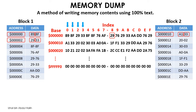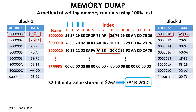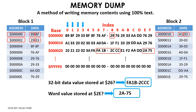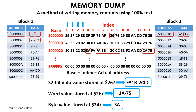Combining this with the knowledge of various data sizes: the value of the 32-bit data stored at address 26 is found by looking at base 20 under index 6, giving FA1B2CCC. The word value at address 2E is 2A75. The byte value stored at address 24 is 3A. Remember that the base address plus the index address gives you the actual address you are looking for.